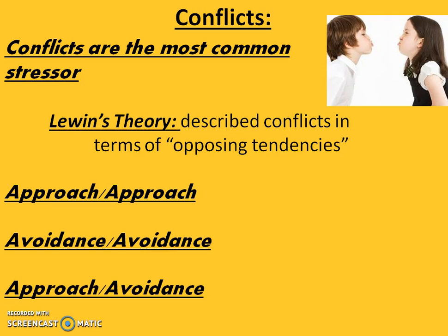A familiar example is a couple whose only quarrel is that one wants to get married, but the other is unsure. The second person wants to continue the relationship — that's approach — but is wary of making a long-term commitment — that's avoidance. In real life, we're often faced simultaneously with two or more goals, each of which is less than ideal but also has enough positive features to attract us.